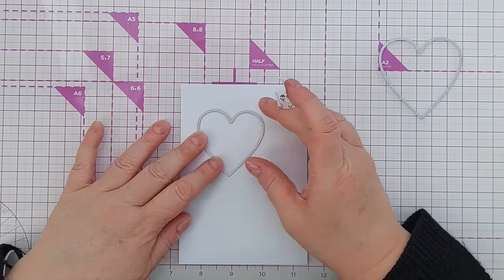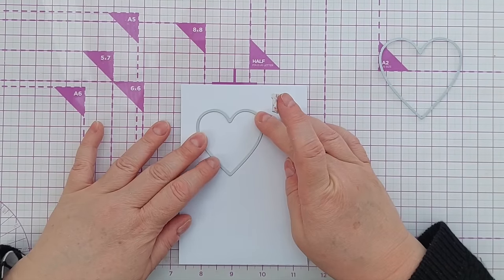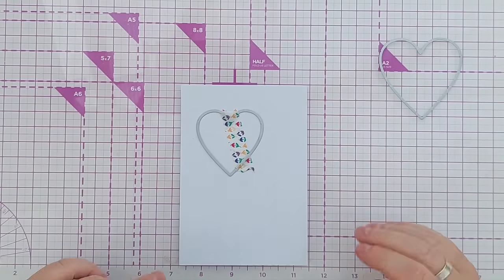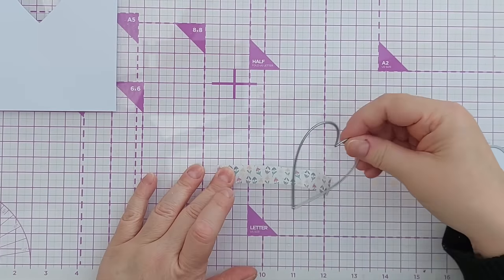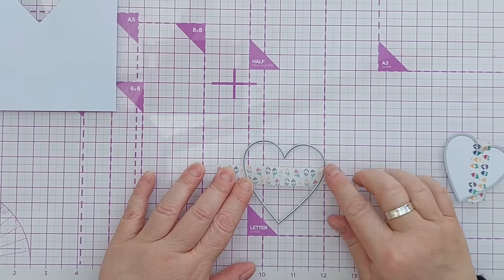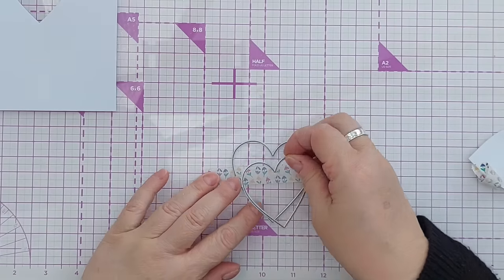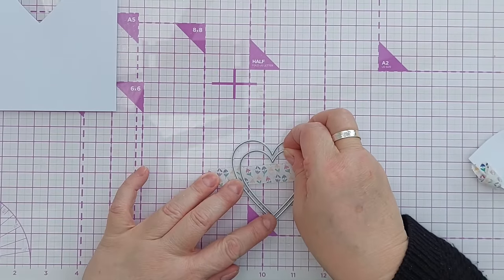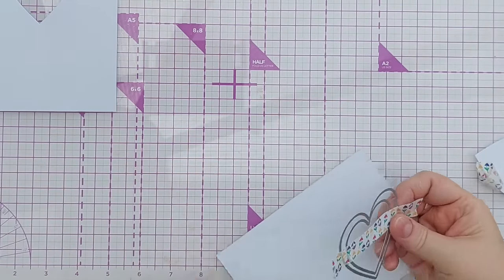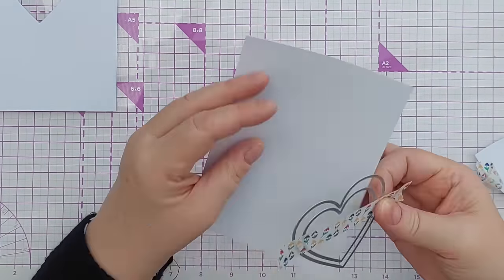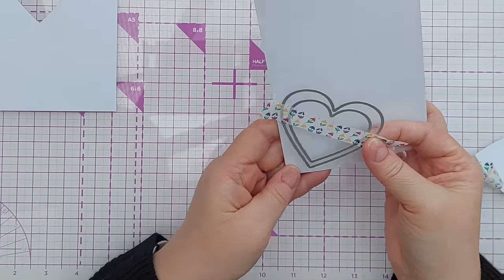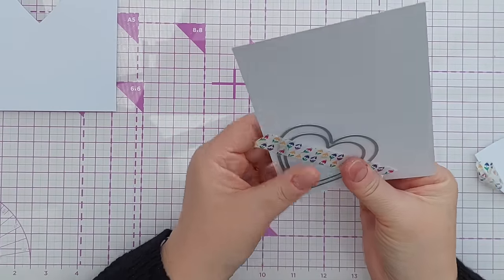So I think we'll quickly turn this into a shaker card. I'm going to die cut a heart from the panel here and now I'm going to create a frame so I'm going to take another heart this is the next size up and I'm going to put that in there so I get a little frame and cut that from smooth white card stock.